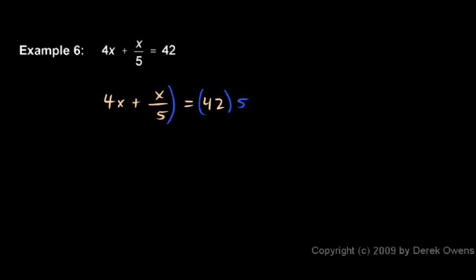So both sides of the equation get multiplied by 5, and we distribute 5 times 4x is 20x.